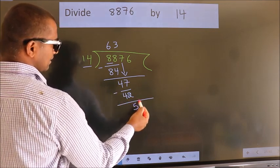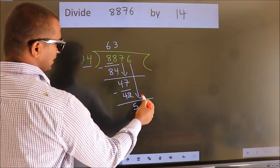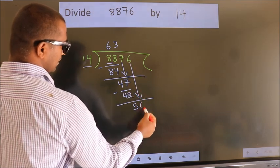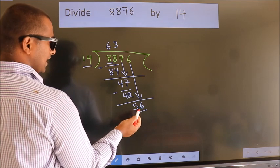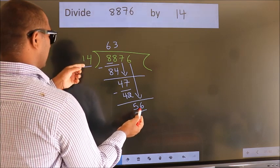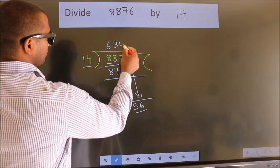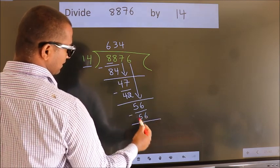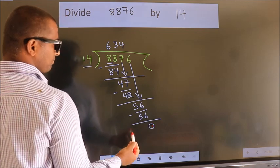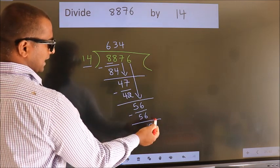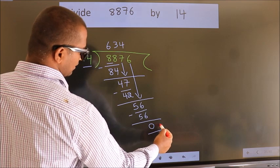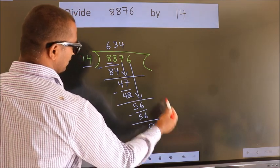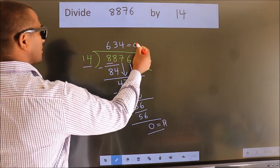After this, bring down the beside number, so 6 down. So 56. When do we get 56 in 14 table? 14 times 4 is 56. Now we subtract, we get 0. No more numbers to bring it down, so we stop here. This is our remainder. This is our quotient.